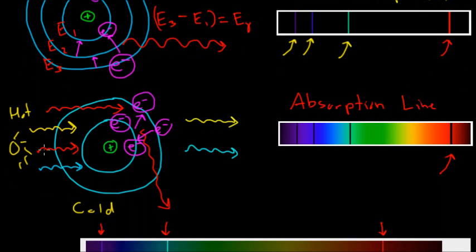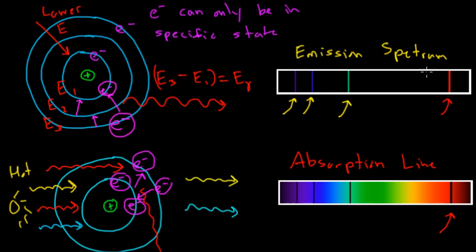Or I could have a bright source of light behind my atom, and if this atom is cold so all the electrons are in lower energy states, if a certain wavelength of light comes in at just the right wavelength, then it could excite that electron into a higher energy state, and in our spectra that will have absorbed that color of light, so we'll see a dark band in that absorption spectra. We also notice that these emission lines and these absorption lines will exactly correspond with each other — the same wavelength of light corresponds to both directions of that transition.